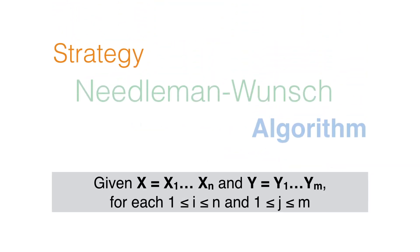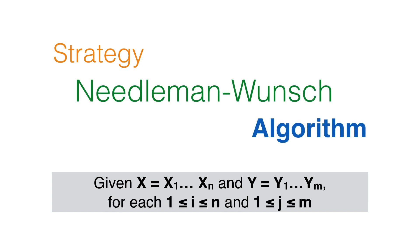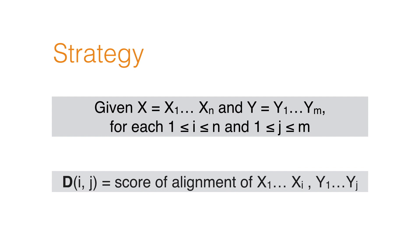Let X and Y be a pair of protein or amino acid sequences. The strategy of Needleman-Wunsch is computing the score of the alignment of prefixes of the input sequences. The results are stored in a dynamic programming array, denoted D. Each entry D(i,j) stores the score of the alignment of the prefixes from 1 to i of X and from 1 to j of Y.